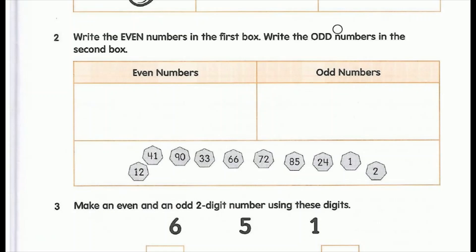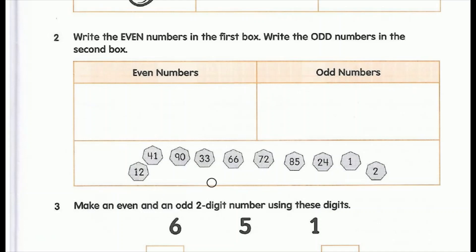Next question: write even numbers in the first box and odd numbers in the second box. Here we are given a few numbers to separate into even and odd. The number 12 ends with 2, and 2 is an even number, so 12 goes to the even numbers box. 41 ends with 1, and 1 is an odd number, so 41 goes to odd numbers. 90 ends with 0, and 0 is an even number, so 90 goes to even numbers. 33 ends with 3, and 3 is an odd number, so 33 goes to odd numbers. 66 ends with 6, and 6 is an even number, so 66 goes to even numbers. 72 ends with 2, and 2 is an even number, so 72 goes to even numbers.